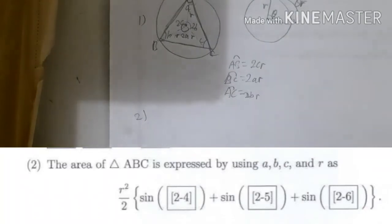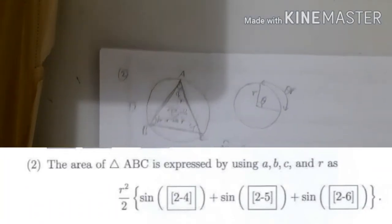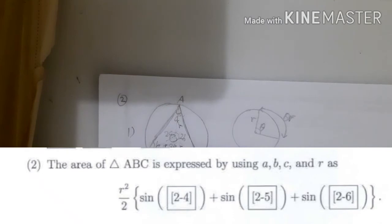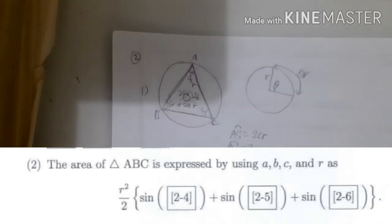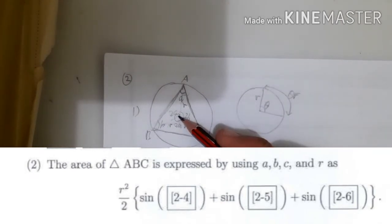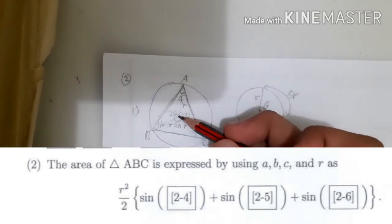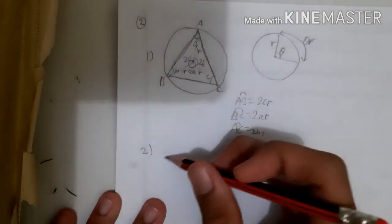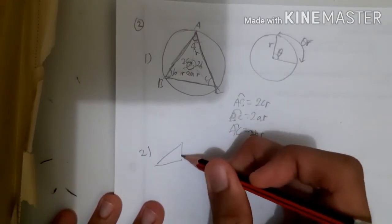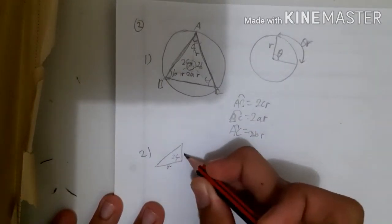Number 2 asks for the area of triangle ABC expressed using A, B, C, and R. We just have to find this area of the triangle. We can divide it into three different triangles: triangle AOB with central angle 2C and two sides R, triangle AOC with angle 2B and sides R, R.